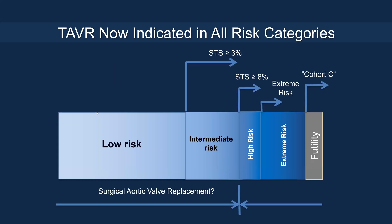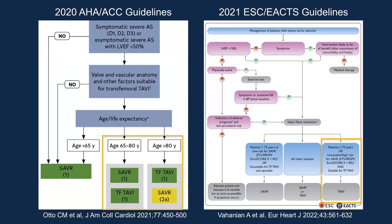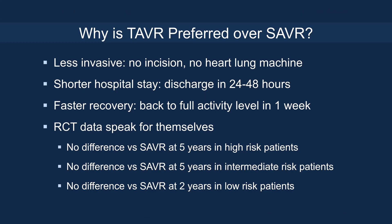TAVR is now indicated in all surgical risk patients. With the US guidelines in 2020 and the European guidelines in 2021, both recommend TAVR as a Class I indication — in the US for patients age 65 or older, and in Europe for patients age 75 or older — where TAVR is as good or as relevant as SAVR.